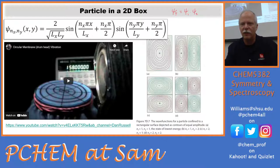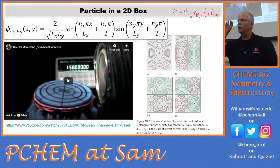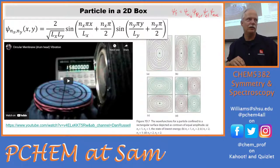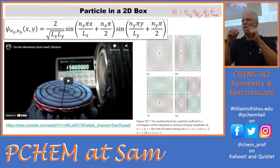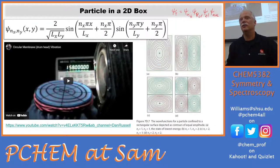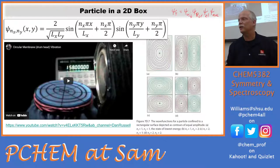Psi total is equal to psi_1 times psi_2 — vibration, rotation, electronic, nuclear. We have an electronic wave function, a nuclear wave function, a rotational wave function, and a vibrational wave function. We could also have a translational wave function, but the translational energy differences are so small because we're in big boxes like this room that they're not detectable. So we can't see the quantum effects of translation, but there would be a translational wave function.